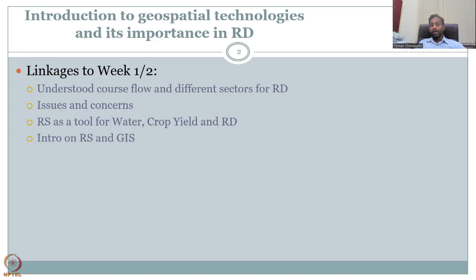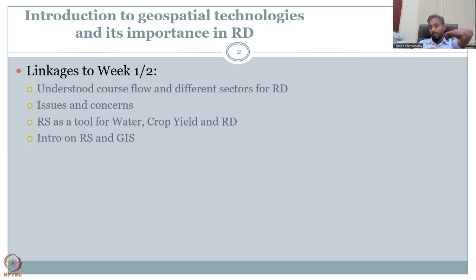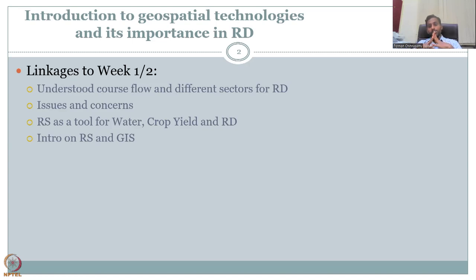Therefore, we looked at remote sensing as a tool, majorly for water, crop yield, and rural development. We stress the fact that rural development doesn't just mean water resources are increased — there is housing, cooling, and infrastructure that also needs to come together. Then we went into the introduction of remote sensing and GIS.